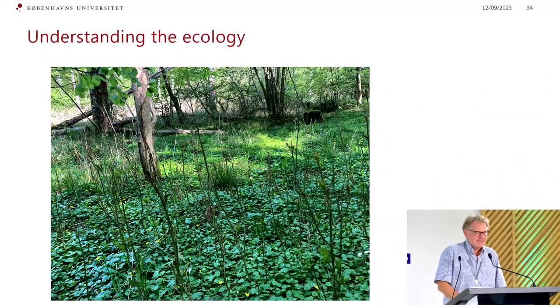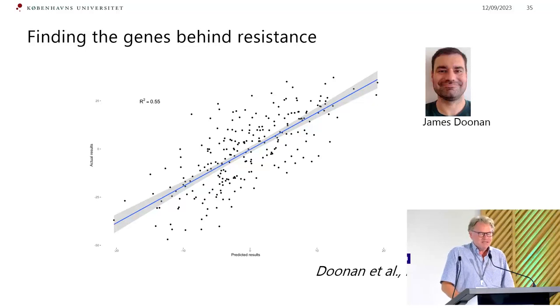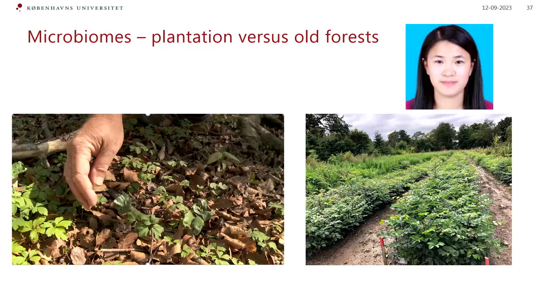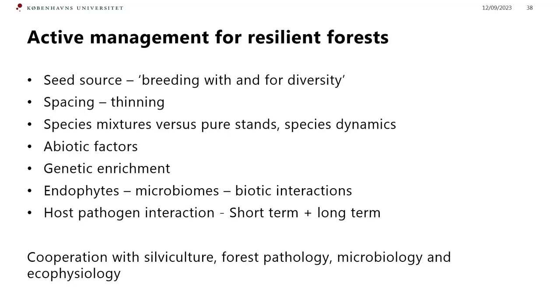We need to understand the ecology, and we need to understand more about the genes. In our group, James Dunans is trying to understand the genes, and there will be a presentation by Richard Box about finding the genes behind the tolerance. There is also the issue of endophytes — many people look at endophyte assemblages, and what I want you to see is that different genotypes have different endophytes, and endophytes differ between spring and autumn. We will work to understand the difference between the microbiome in plantations versus forest. All these things require cooperation between silviculture, forest pathology, microbiology, and ecophysiology in order to give guidelines — that is the kind of cooperation we need.